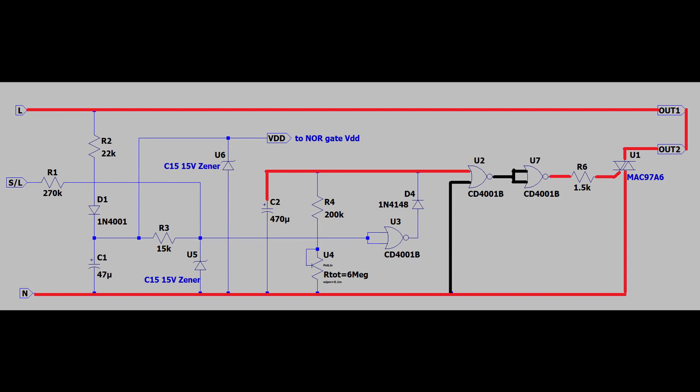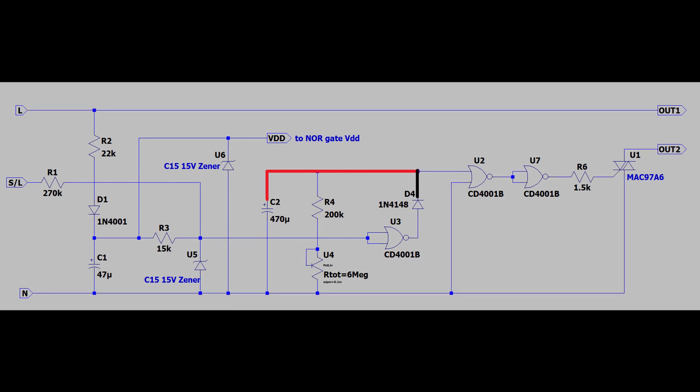So what about the timer portion? How does the fan stay on after the switch has been turned off? This is where the potentiometer comes in. Since the fan is turned on when the capacitor voltage is high, the duration of the on time can be set by changing how long it takes for the capacitor to discharge. The diode that charged the capacitor will block any reverse current flow back into the first NOR gate, which would damage it. So the capacitor needs to be discharged through the potentiometer.